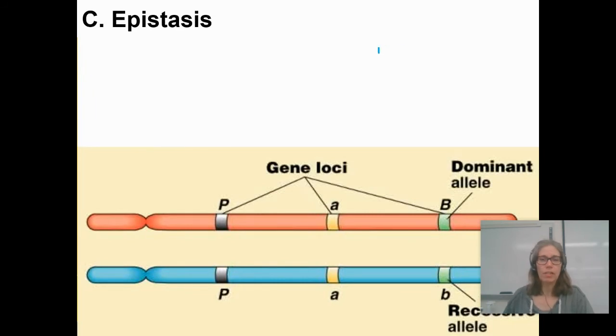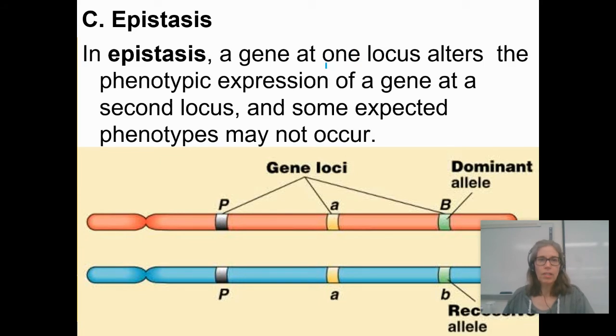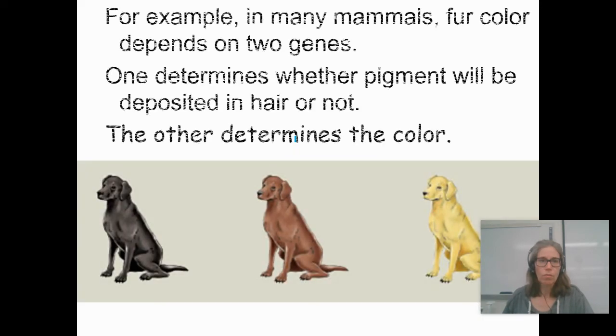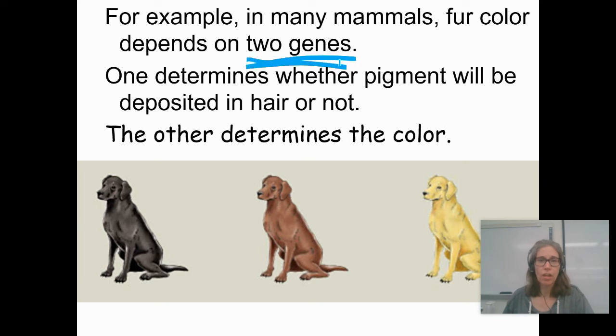Epistasis is an example of polygenic inheritance. In epistasis, a gene at one locus, one location, alters the phenotypic expression of a gene at a second locus, and some unexpected phenotypes can occur. For example, in many mammals, fur color depends on two genes. One determines the pigment, whether you're going to be brown or black, and the other determines whether you get to have that color at all.